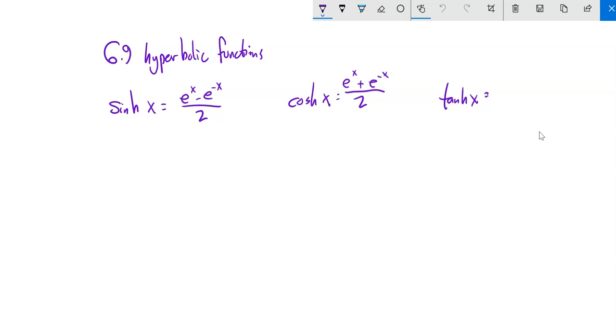When we think about trig functions, we define them on the unit circle. Hyperbolic functions are a modification of them, but they're based on ratios that come off of hyperbolas related to the angles. And that's why they're called hyperbolic functions.